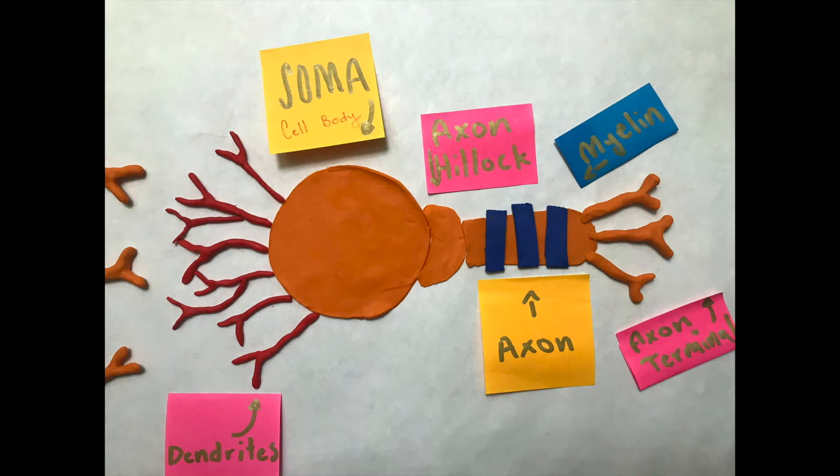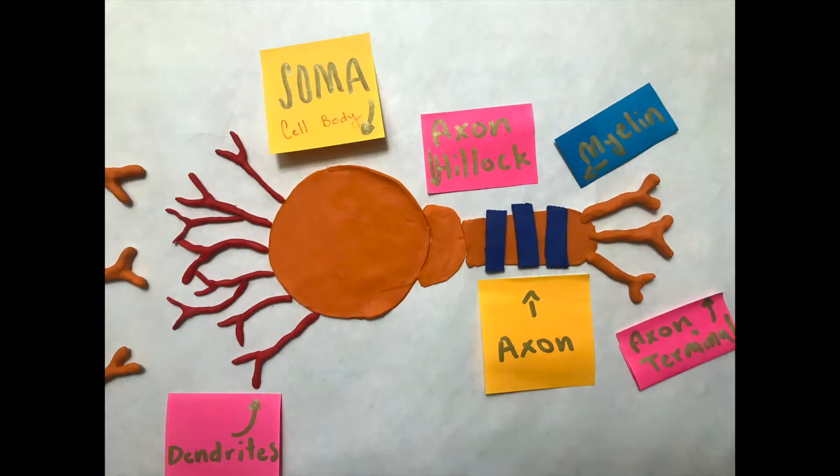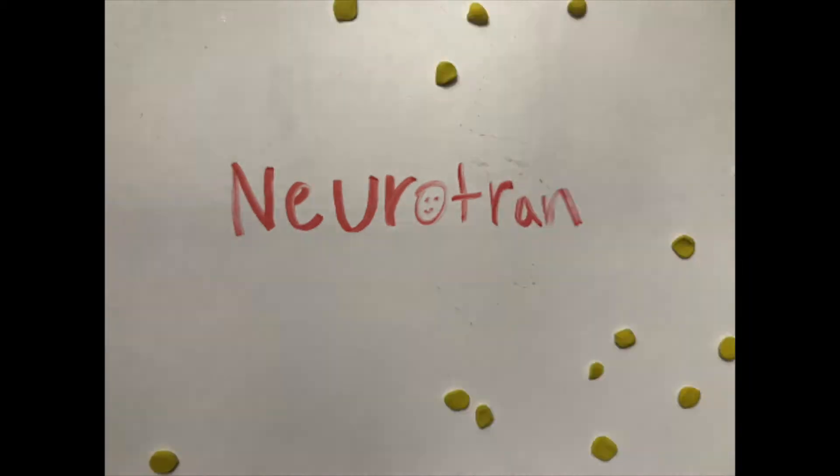Dendrites are in charge of receiving information from other neurons. For example, thinking 'I can do it' every single time you fail. This message enters the dendrite receptors in the form of a chemical called neurotransmitters.